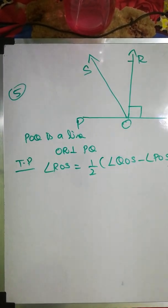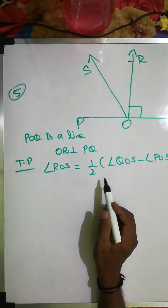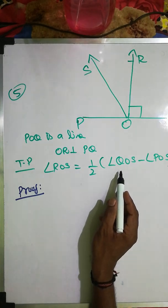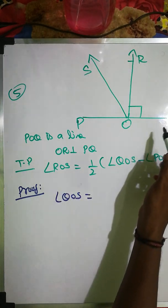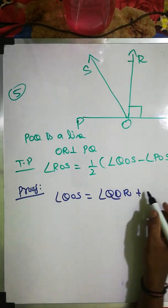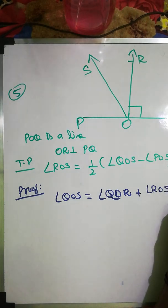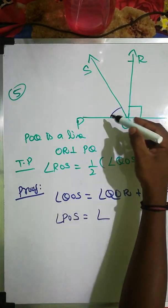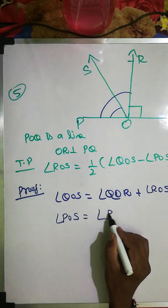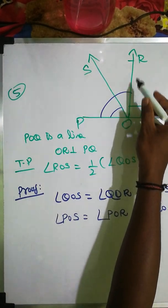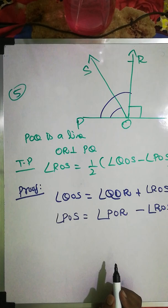Question number 5. POQ is a line and OR is perpendicular to PQ. We have to prove angle ROS equals half of (angle QOS minus angle POS). From the diagram: angle QOS equals angle QOR plus angle ROS (equation 1). Angle POS equals angle POR minus angle ROS, since POR is the whole angle and subtracting ROS gives POS (equation 2).